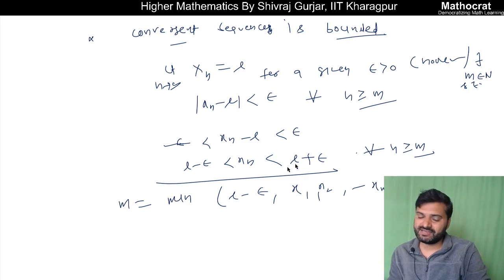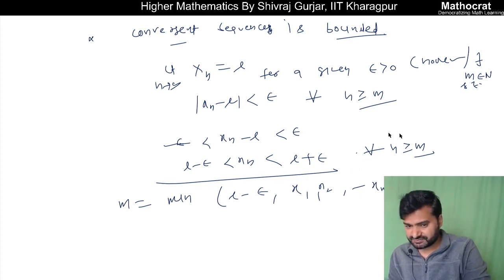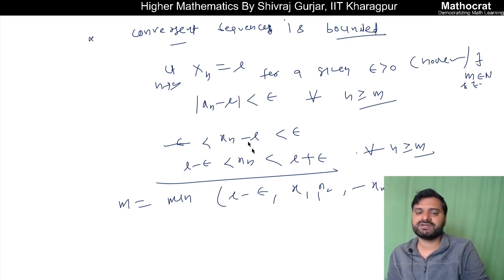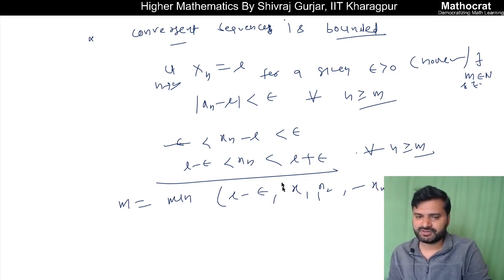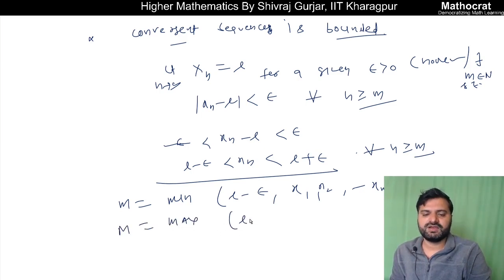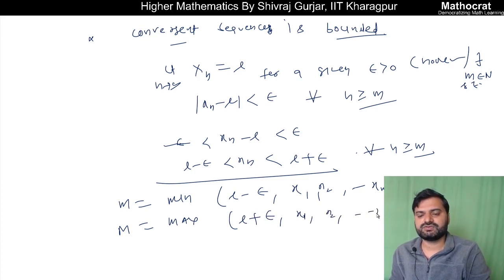For n greater than or equal to m, all terms satisfy this inequality, so they are bounded. For the terms x1, x2, up to x_{m-1}, those are finitely many terms.